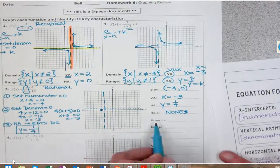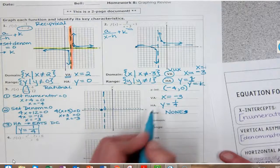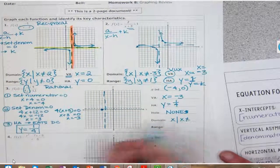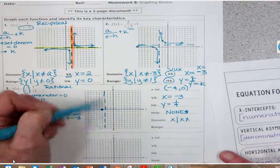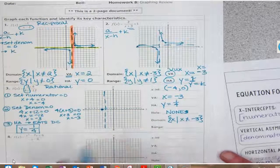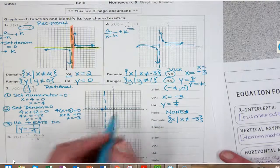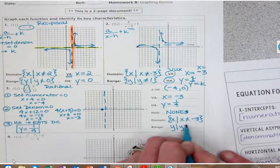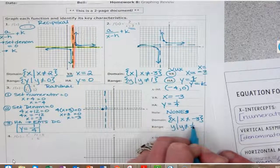My domain is the same as before. It's the set of all numbers where x cannot equal my asymptote. It cannot equal negative 3. Do you see that? And my y is the set of numbers where y cannot equal one fourth.